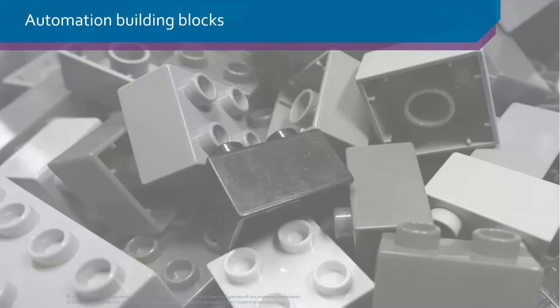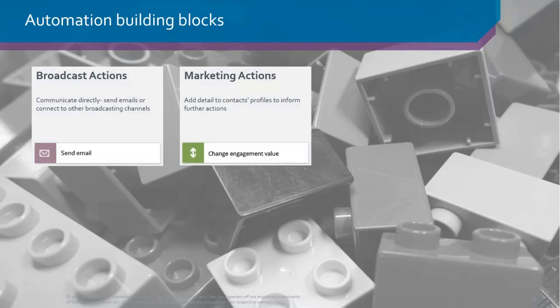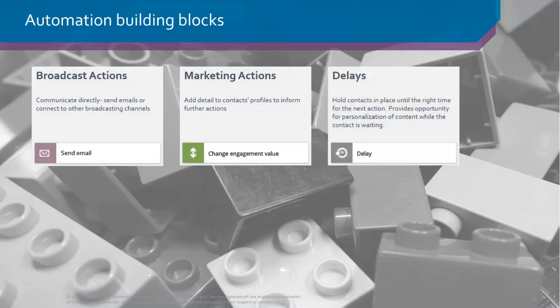Let's talk about the building blocks. The first is broadcast actions — out of the box this is clearly sending an email, but we have the capacity to expand to other broadcast channels such as SMS and app notifications, which we intend to build up over time. Marketing actions are things that happen behind the scenes — they don't affect the contact directly, but they help build up the profile, such as changing engagement scores depending on where they are in an automation campaign, changing profile scores, or adding them to a list.